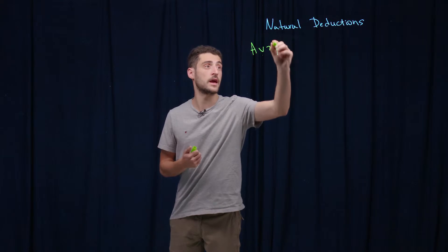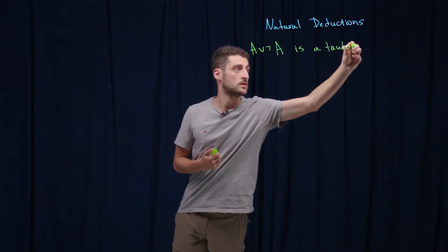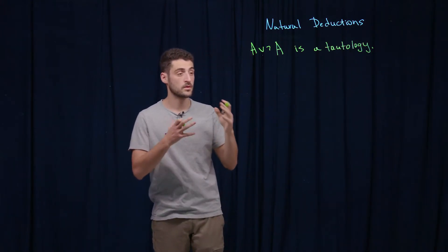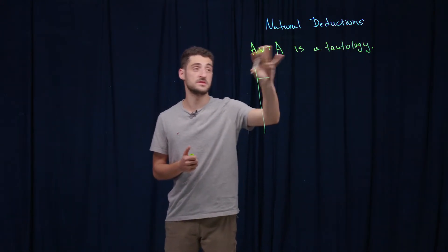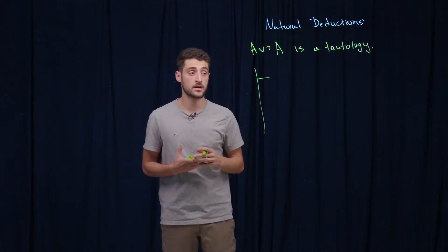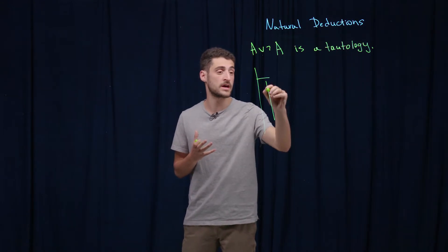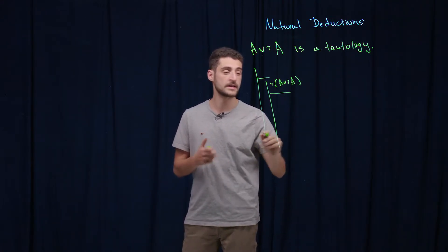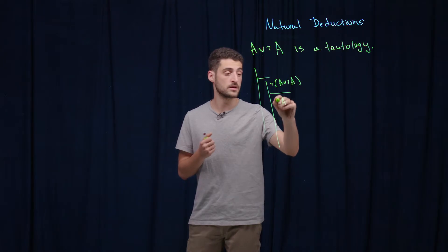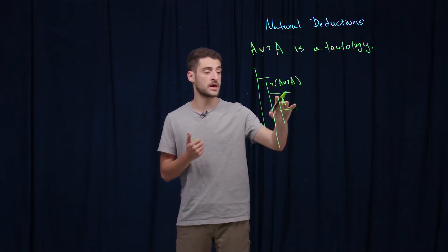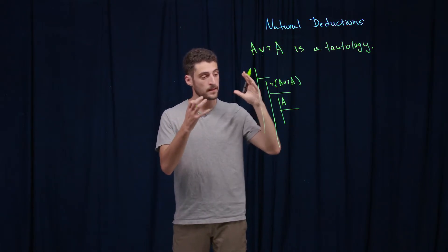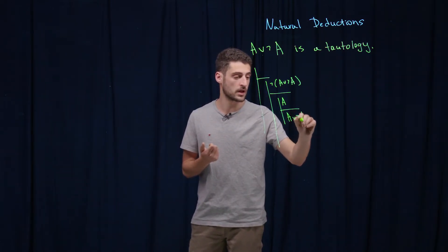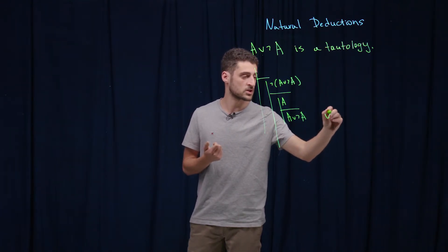Let's use these rules to prove the law of excluded middle. In other words, let's prove that a or not a is a tautology. We don't have any assumptions since it's a tautology. Let's prove it by contradiction: assume that it's not true, so assume not (a or not a). Let's consider the cases — assume that a is true.